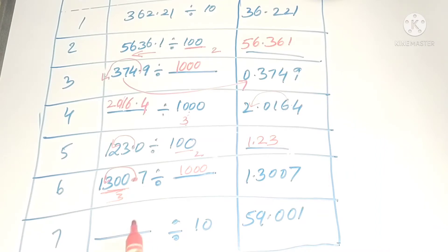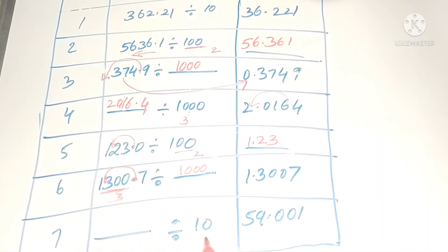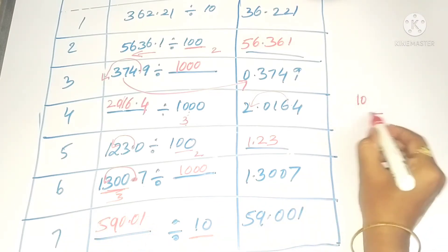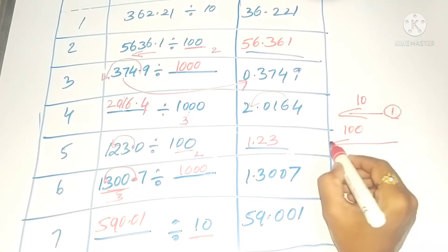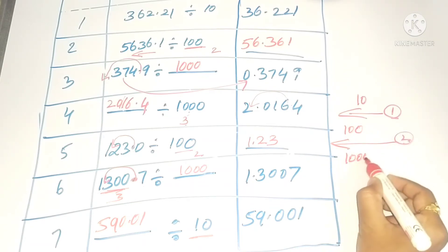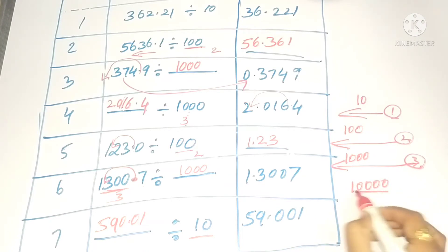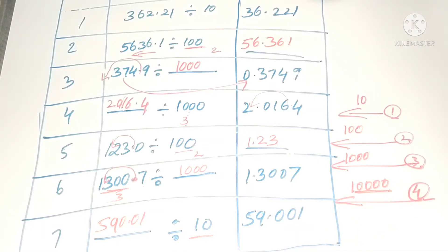I already told you how to divide decimals — please watch the introduction to Exercise 2.3. To summarize the rule: when we divide with 10, the decimal point shifts one place left; with 100, two place values left; with 1000, three place values left; with 10,000 (four zeros), it shifts four place values to the left — always to the left side.